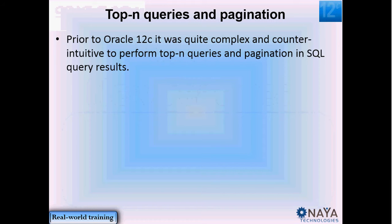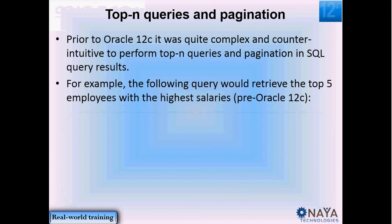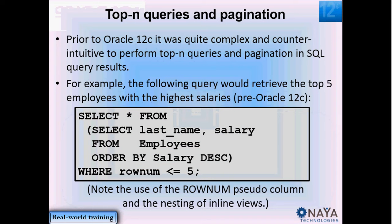Prior to Oracle 12c, it was actually quite complex and counter-intuitive to perform such queries in Oracle. Should you wish to write a query that retrieves the top five earning employees, you would have to use an inline view — that is an inner select statement — which performs the order by, the ordering of your results, and in your outer query you would have used the ROWNUM pseudocolumn to limit the rows to the first five.